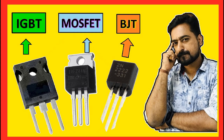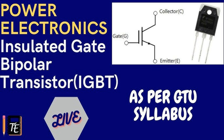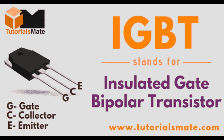Operation of IGBT: The IGBT operates in two main states — on (conducting) and off (non-conducting). In the off state, no voltage is applied to the gate terminal. The device blocks current flow from the collector to the emitter because there is no conductive path created between the layers, and the IGBT is in its high-impedance state. The N-drift region supports any external voltage applied across the collector and emitter, allowing the device to block high voltages.